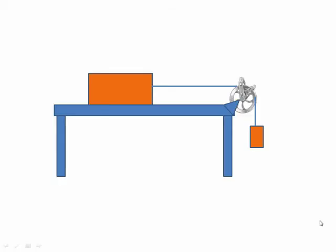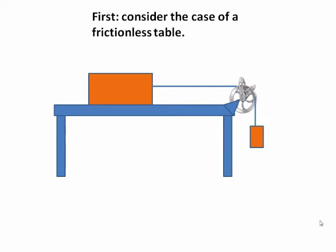Let's consider the case of a large mass on a table that has no friction, and a lesser mass over a pulley pulling it. Now, it will cause that to accelerate.